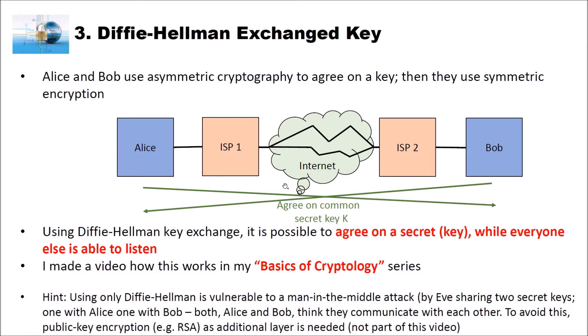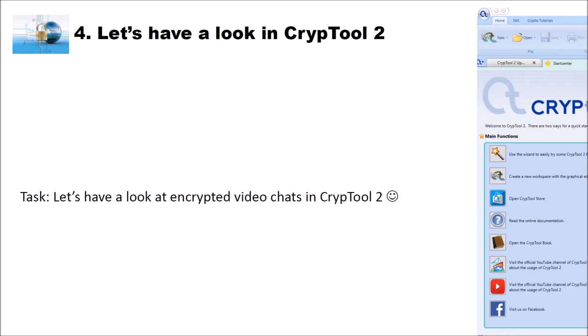To counter this attack we have to use another layer, for instance RSA with public and private keys. But this is not part of this video. Now let's come directly to Crypto2 and have a look at how you can implement an AES encrypted video chat using Crypto2 — for instance with a pre-shared key, and also with Diffie-Hellman.